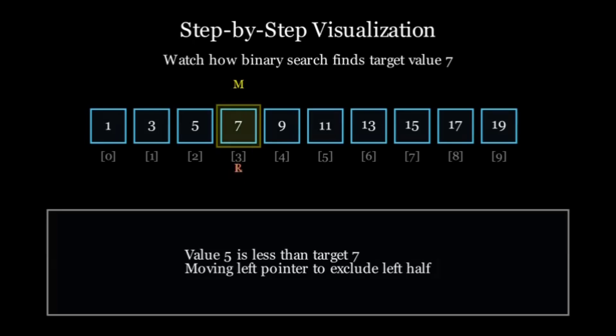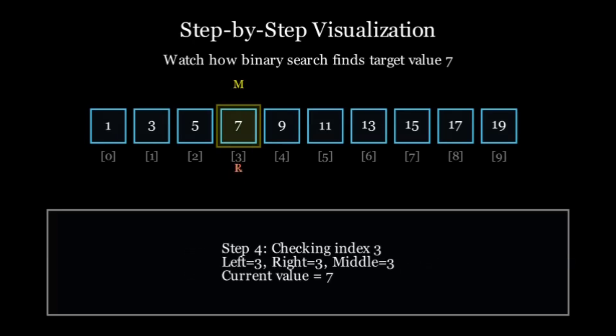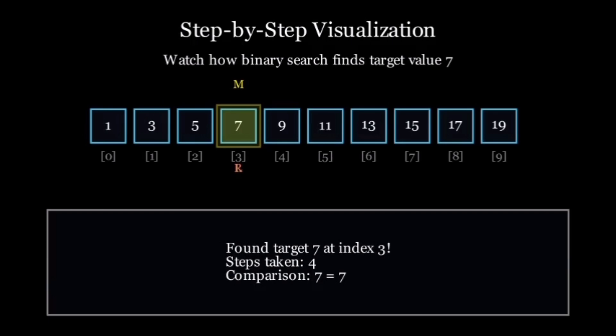The last step, step 4. Now our search space is just index 3. The middle index is (3 + 3) // 2, that is 3. The value at index 3 is 7. Is 7 equal to 7? Yes. We have found our target in just 4 steps. And that's the power of binary search.